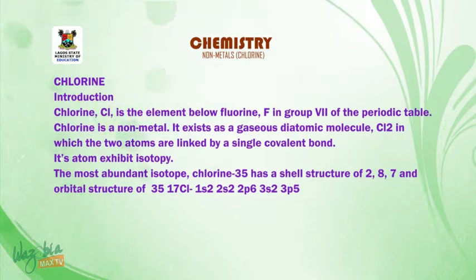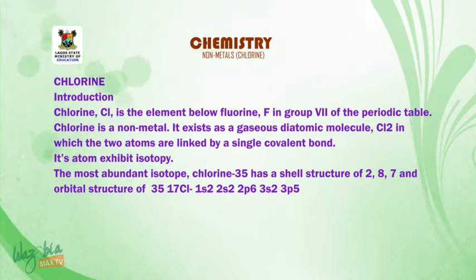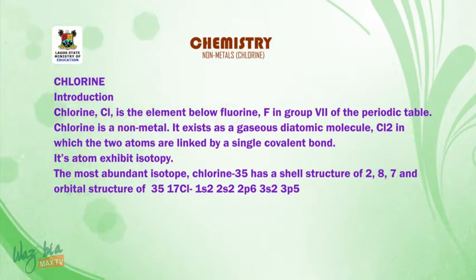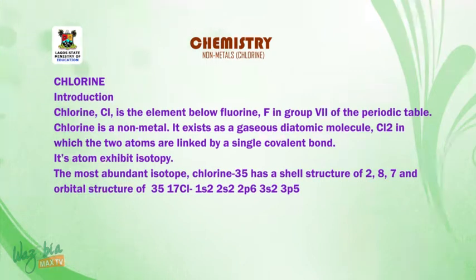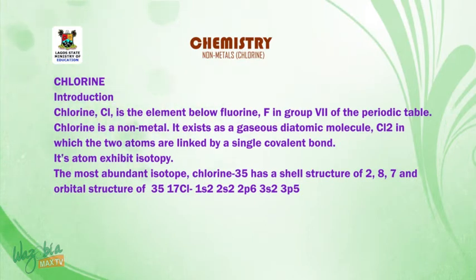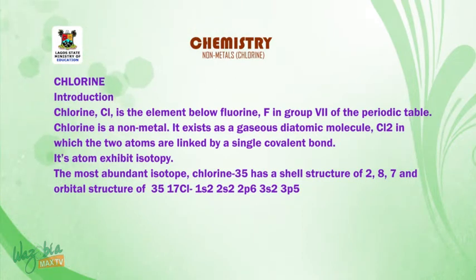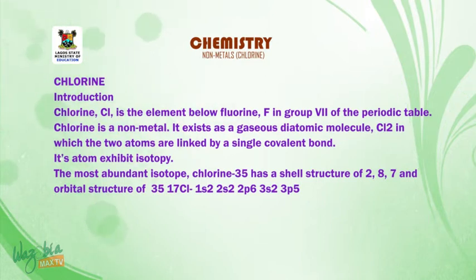Introduction to chlorine. Chlorine, with symbol Cl, is the element below fluorine in group 7 of the periodic table. Chlorine is a non-metal. It exists as a gaseous diatomic molecule, Cl2, in which the two atoms are linked by a single covalent bond. Its atoms exhibit isotopes. The most abundant isotope, Cl-35, has a shell structure of 2, 8, 7 and orbital structure of 1s2, 2s2, 2p6, 3s2, 3p5.